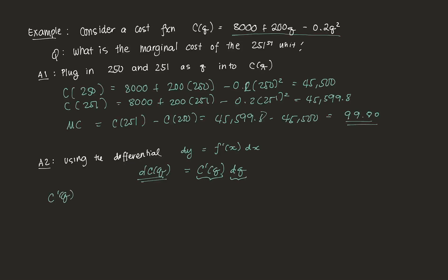C'(q) is the derivative of the cost function with respect to q, which is 200 − 0.4q. Then dq is the change in output — we're going from 250 to 251 units, so dq = 1 (one additional unit). We can now plug these in: dC(q) = (200 − 0.4×250) × 1.